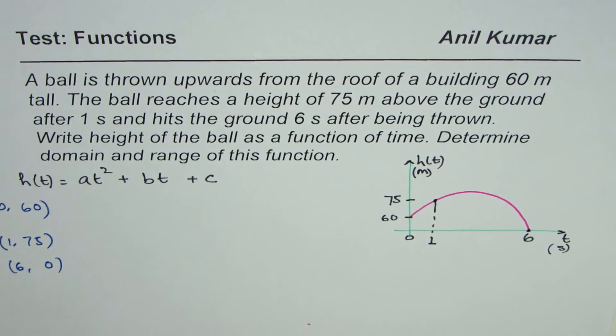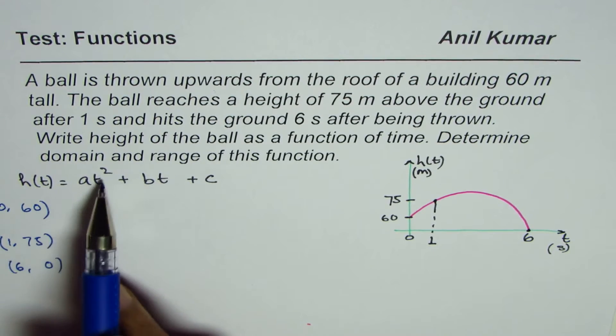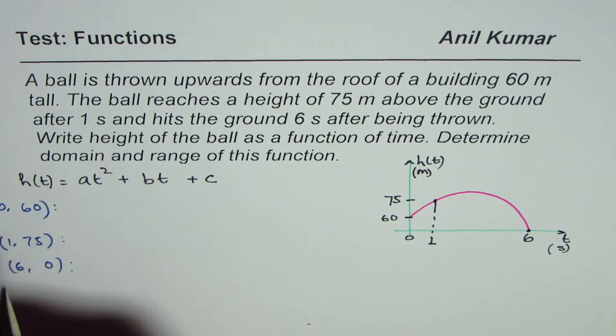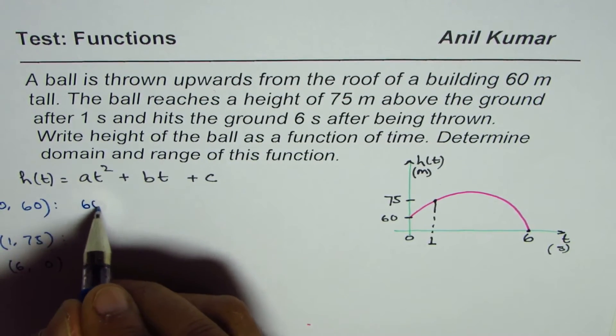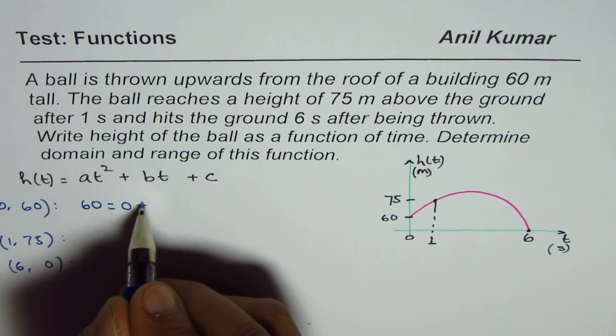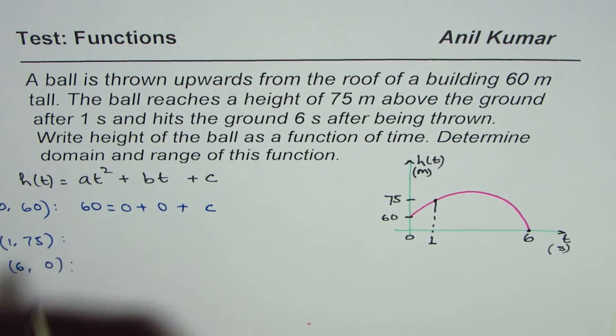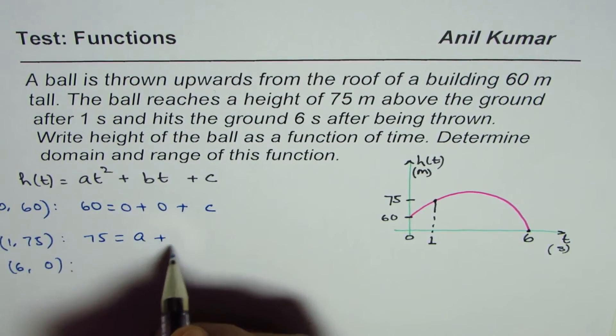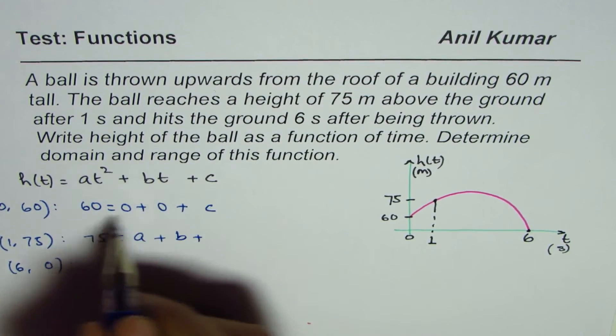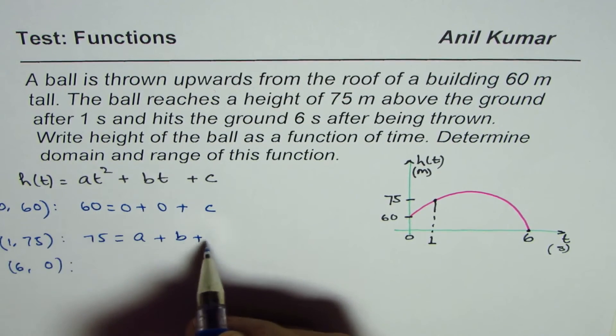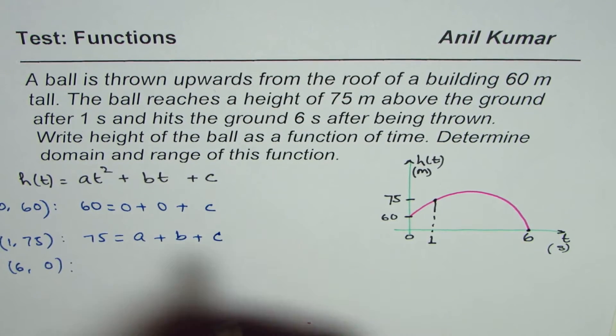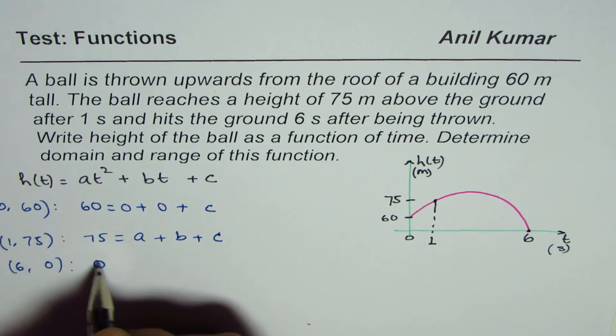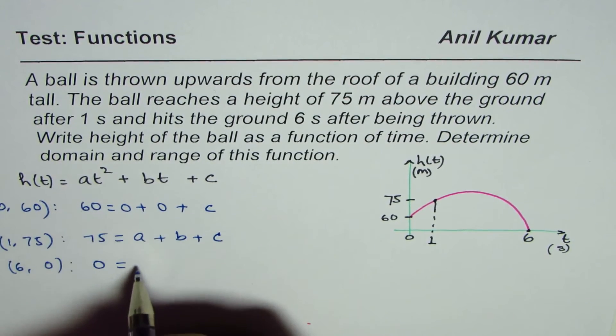Substituting these you will actually get three equations. For example, the first one will be 60 equals to zero plus zero plus c. The second one will be 75 equals to, when you substitute one here, a plus b plus c. C is 60 so you're going to actually write 60 also.